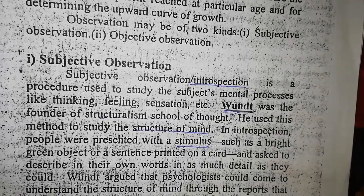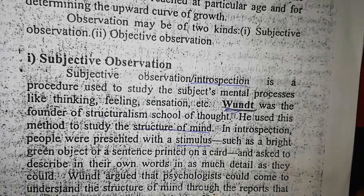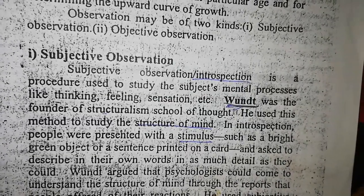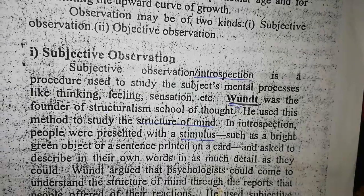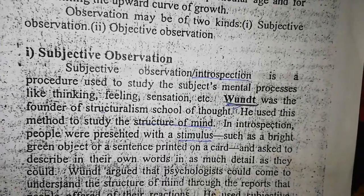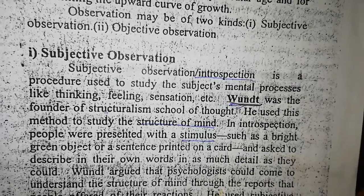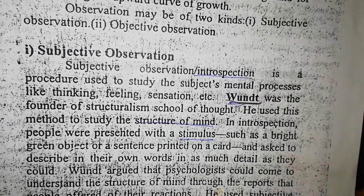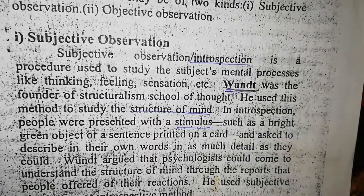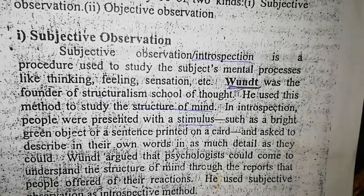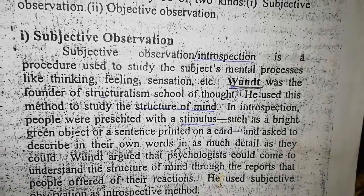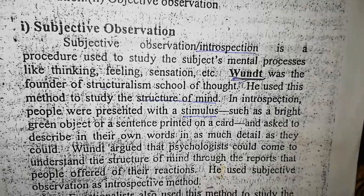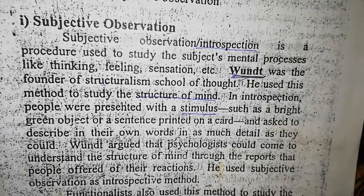Subjective observation is a procedure used to study the subject's mental processes like thinking, feeling, and sensation. Wundt was the founder of the structuralism school of thought and used this method to study the structure of the mind. In this observation, people were presented with a stimulus such as a bright green object or a sentence printed on a card, and asked to describe it in their own words in as much detail as they could.